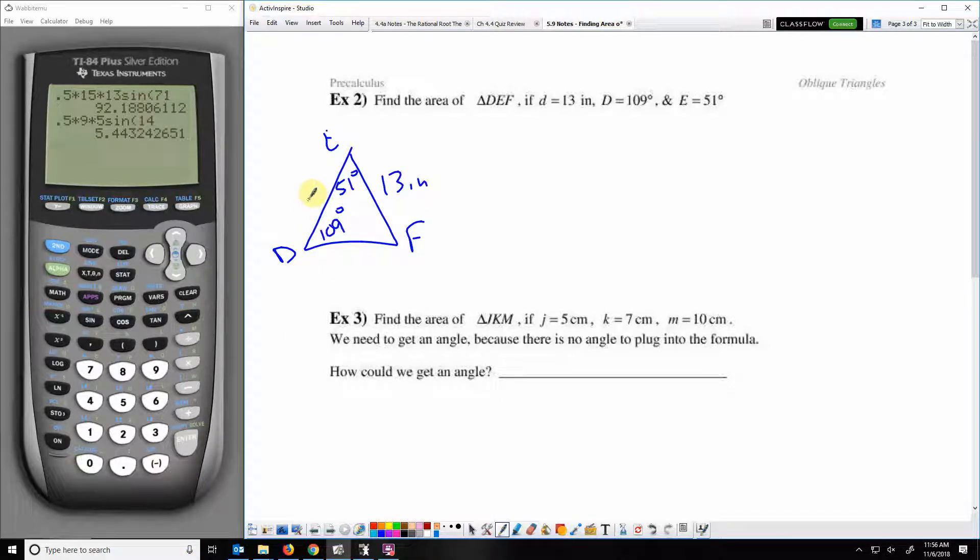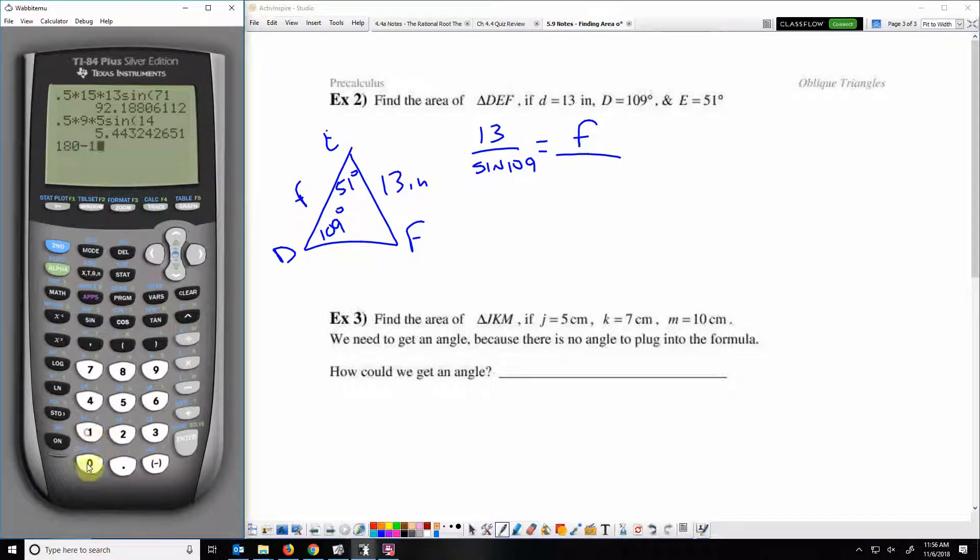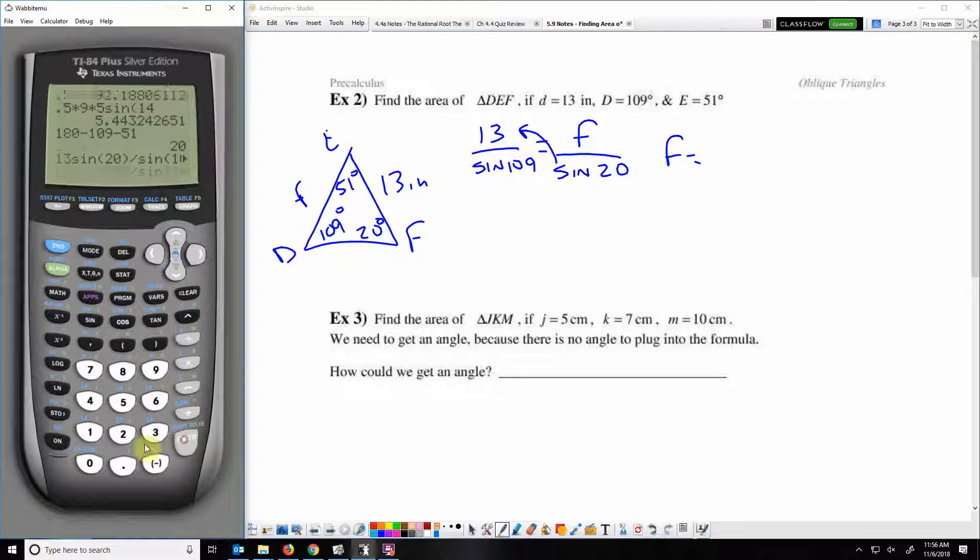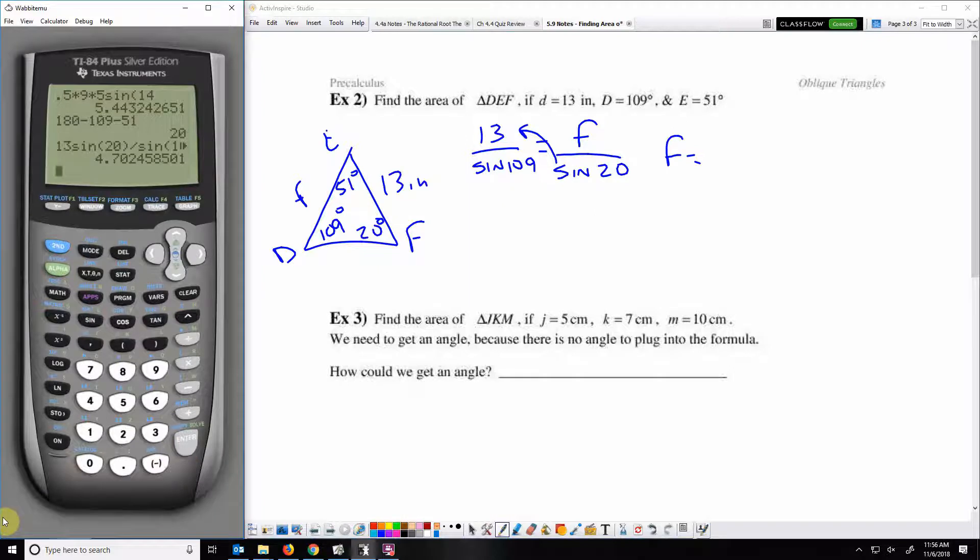We can actually get that using the law of sines. We can do 13 over sine 109 equals side F over the measure of angle F. To get the measure of angle F, we can do 180 minus the two angles that we already know. It turns out angle F is 20 degrees. I can multiply that across and get the length of side F. We find that side F is about 4.7 inches.